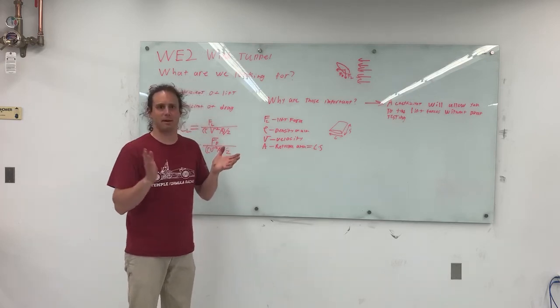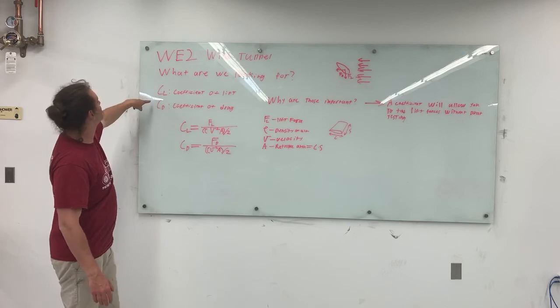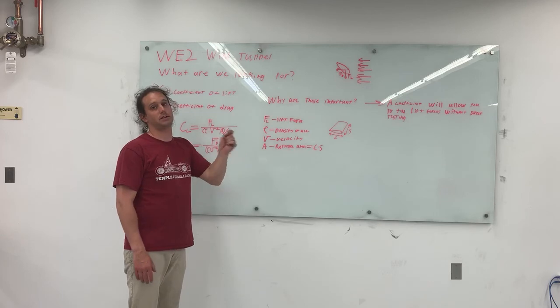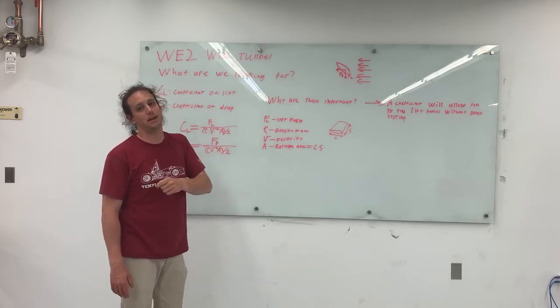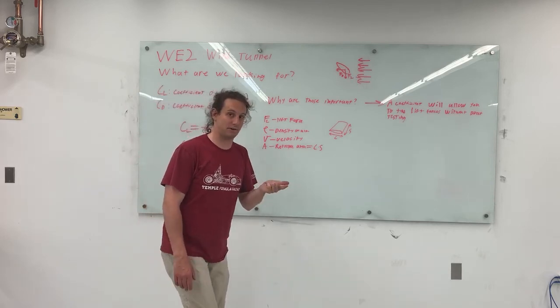So what are we finding in this lab? What we're going to try and find is both a coefficient of lift and a coefficient of drag for the airfoil in question at all of the different angles of attack. So each angle of attack and each speed is going to spit out a different coefficient of drag and a different coefficient of lift.